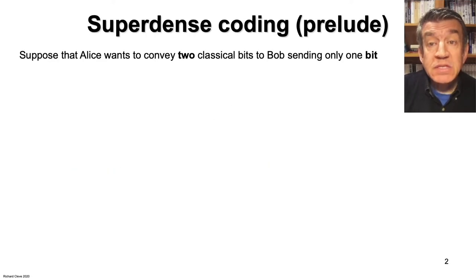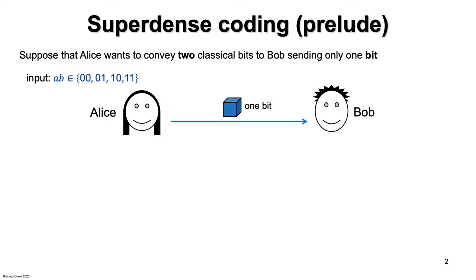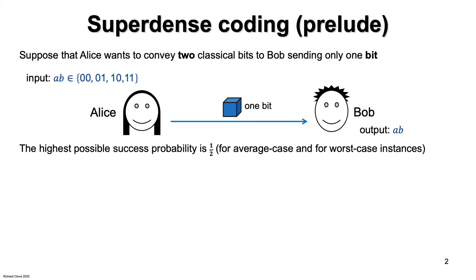Suppose that Alice wants to convey two classical bits to Bob by sending only one classical bit. Alice receives her two bits, A and B. She somehow creates a one-bit message to send to Bob, who is supposed to determine both A and B from this bit. This is impossible to do perfectly. The highest success probability possible is one-half, and this can be obtained by Alice just sending the first bit and Bob randomly guessing the second bit. This strategy has success probability one-half in the average case as well as in the worst case.